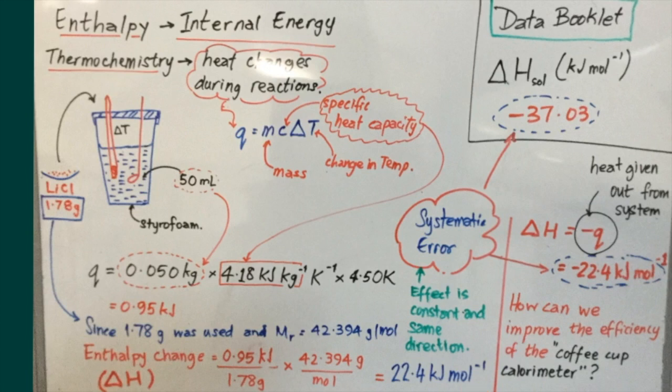So it is required that we convert the enthalpy change from this 1.78 gram portion into the amount that would be generated by 1 mole of lithium chloride, which has a mass of 42.394 grams. Using this calculation here, we can determine that 1 mole of lithium chloride would release 22.4 kilojoules of energy when it enters into solution.